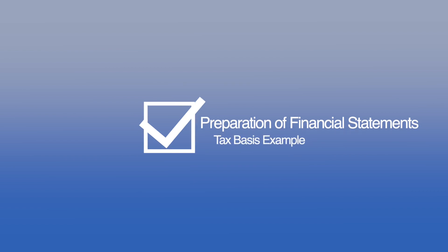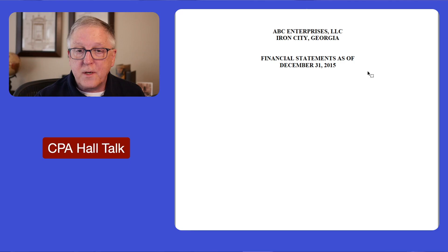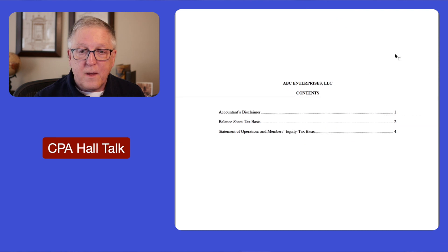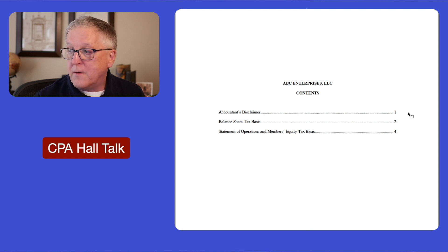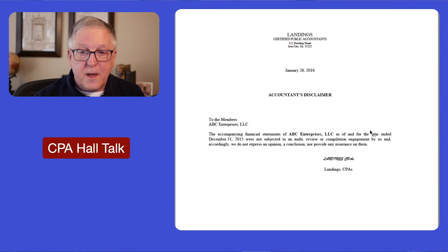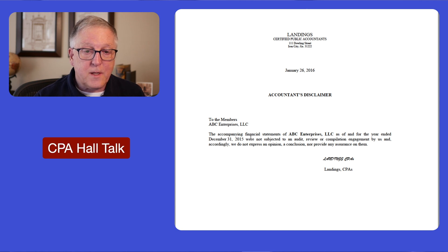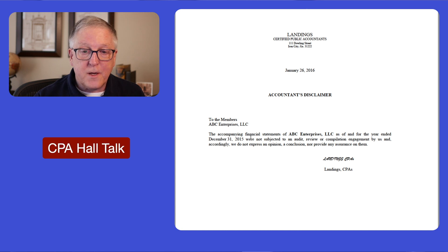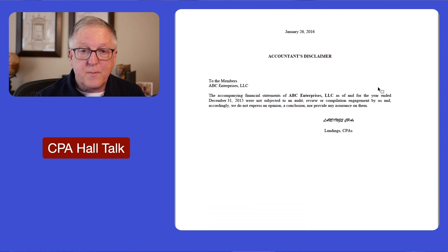Here's a tax basis example — we see the cover page. In the table of contents we see 'balance sheet tax basis' and then 'statement of operations tax basis.' The disclaimer looks like this. Notice I'm not really using the tax basis language in the disclaimer itself — I'm just saying 'see the accompanying financial statements,' and those will be on a tax basis.